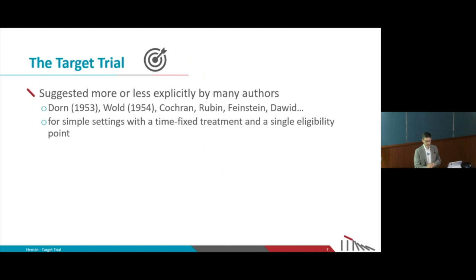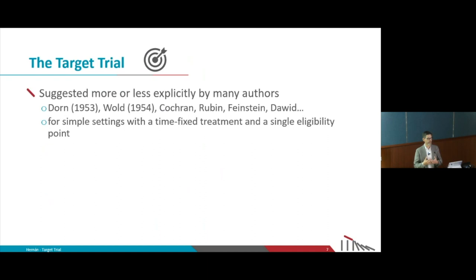This concept of a target trial has been in the literature for a very long time. The earliest reference I found is from the 1950s by Dorn, a statistician at the National Institutes of Health in the US. Around the same time, Wald, an econometrician working in Sweden, was talking about using observational data to mimic a randomized experiment as closely as possible. These people were not using the label 'target trial,' but they were using the same concept.